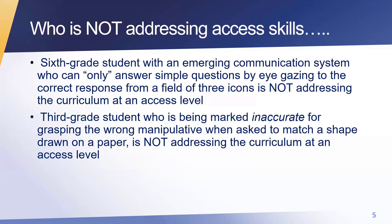It seems clear that the line between access skills and low entries can be really difficult to ascertain. But let's look at the third grade student example. The third grade student is being marked inaccurate for grasping the wrong manipulative when asked to match a shape drawn on paper. That student is not addressing the curriculum at the access level. What is the teacher testing? What makes the student right or wrong? It appears the answer is marked wrong because the student is selecting the shape that doesn't match — and that's an entry point.